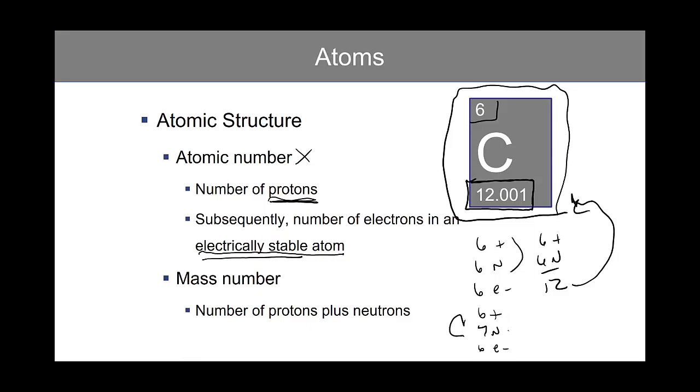This extra neutron is going to increase the mass of carbon. And if you consider all the atoms of carbon in the world, the majority of them are going to be like we had noted before,